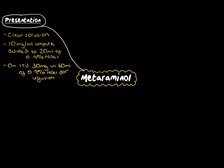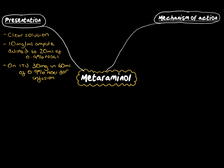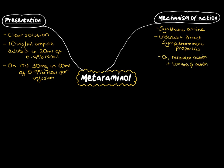Looking at the mechanism of action: it's a synthetic amine. It has indirect and direct sympathomimetic properties. It's mainly an alpha-1 adrenoreceptor agonist, but it does have some limited beta-adrenoreceptor effects. Classically, it works on the cellular membrane via a G-linked protein receptor mechanism — specifically a GQ protein — which leads to an increase of phospholipase C, increased IP3 levels, and the endpoint is increased calcium, which leads to vasoconstriction.